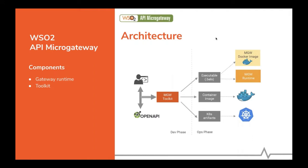Let me briefly explain the architecture of WSO2 API Micro Gateway. It has two basic components: the runtime component and the toolkit component. The toolkit component is a tool used by API developers to create and manage micro gateway projects. It accepts OpenAPI definitions and creates runtime artifacts used by the micro gateway runtime — these can be executable files, Docker container images, or Kubernetes artifacts.